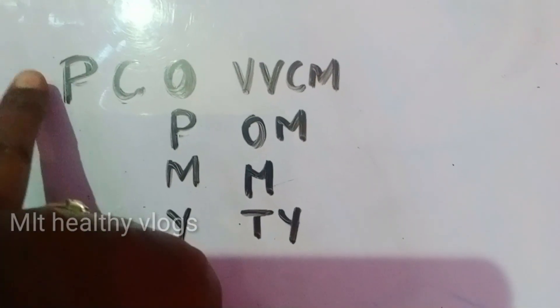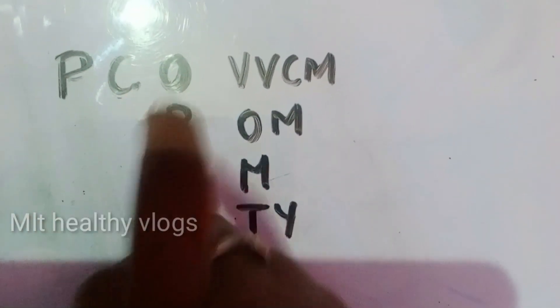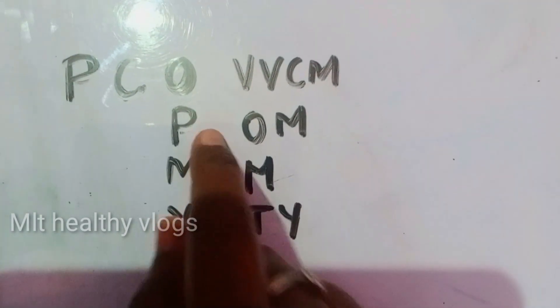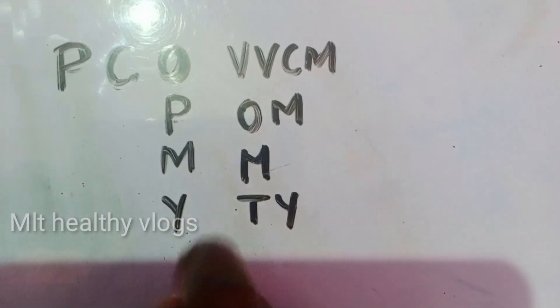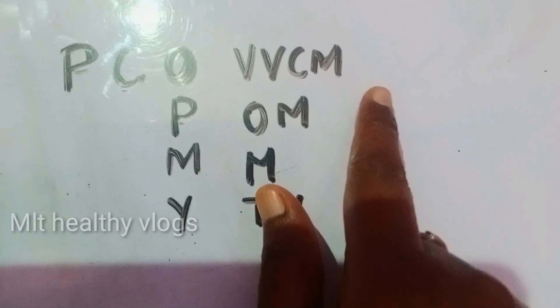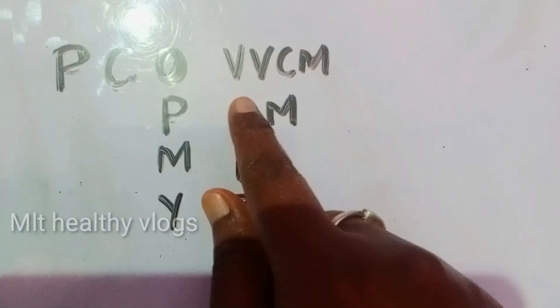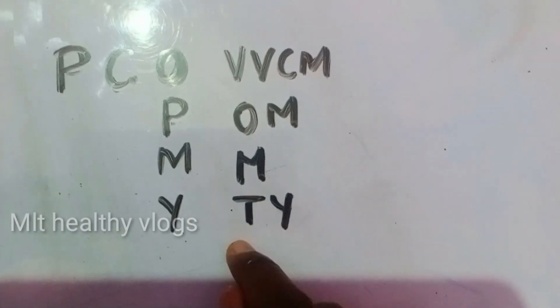To summarize Poxviridae: the family is Poxviridae, Subfamily is Chordopoxviridae, with four genera — Orthopox, Parapox, Molluscipox, and Yatapox. The species under Orthopox include: Variola, Vaccinia, Cowpox, Monkeypox — abbreviated as VCMM or similar.